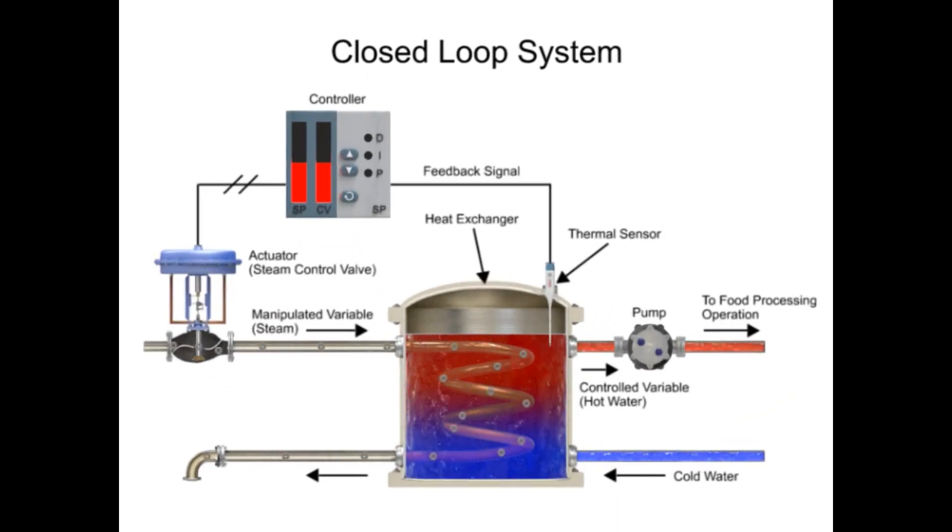The heat exchanger supplies heated water to a food processing operation. Cold water enters the bottom of the vessel where the water temperature rises as it passes through steam-heated coils before flowing out of the pump at the top.